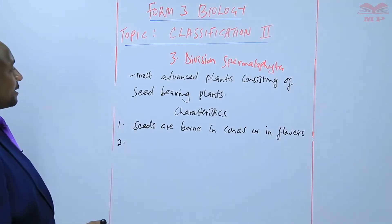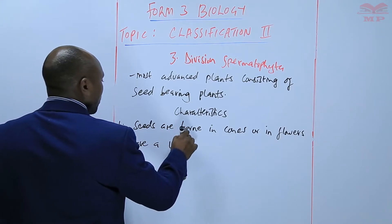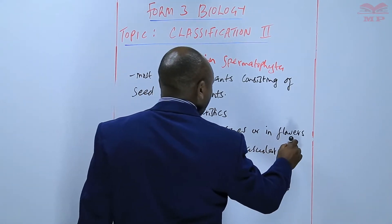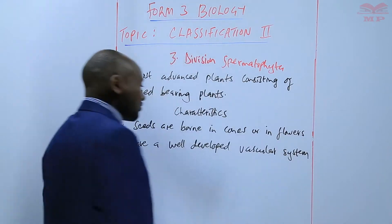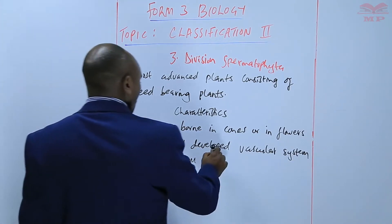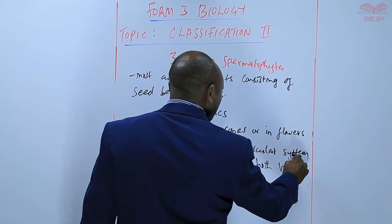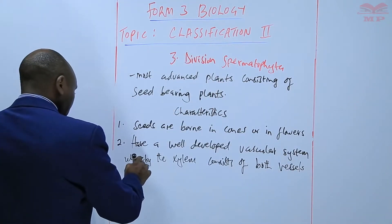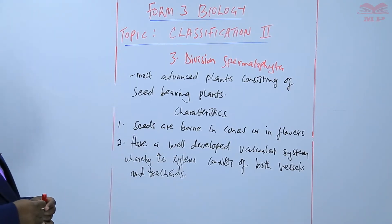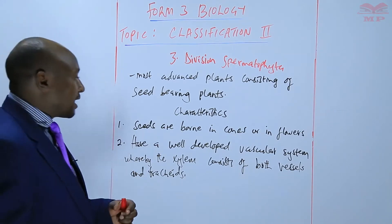Another characteristic of division Spermatophyta is that they have a well-developed vascular system, whereby the xylem consists of both vessels — that is the xylem vessels — and tracheids. So it's a very well-developed vascular system.